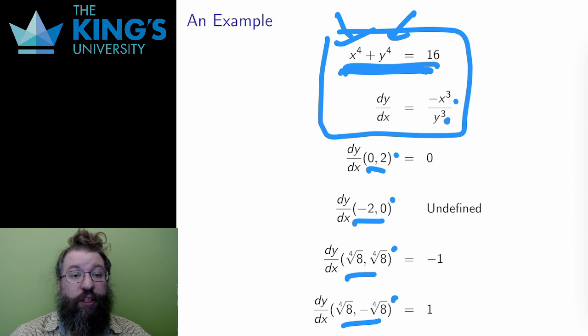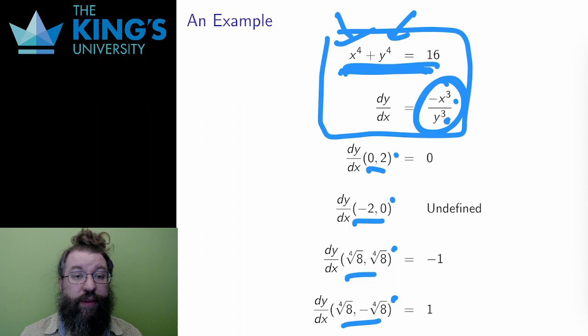Then, for each point x, y, I can evaluate the expression negative x cubed over y cubed. This gives 0, negative 1, and 1 for these three points.